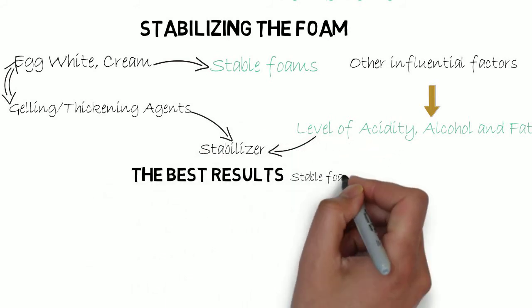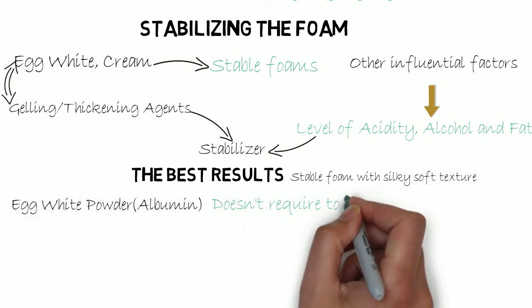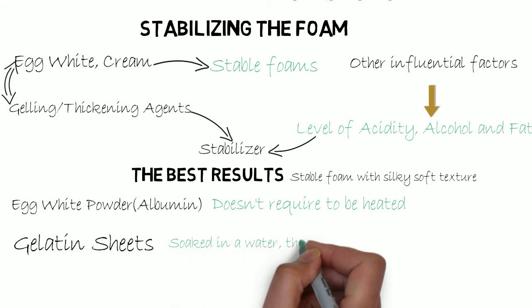The best results for the most stable foam with silky soft texture call for egg white powder, which doesn't require heating, and gelatin sheets, which need to be soaked first in water, then heated with liquid to 60 degrees, cooled, and added to the cream whipper.